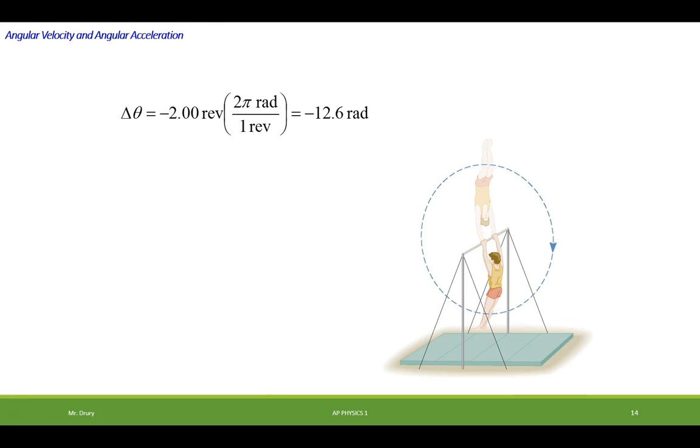Our displacement would be two revolutions, and we use our conversion that one revolution is the same as 2π radians, and we come up with 12.6 radians. Why is it negative? Because he's going clockwise, and by convention, clockwise is negative.